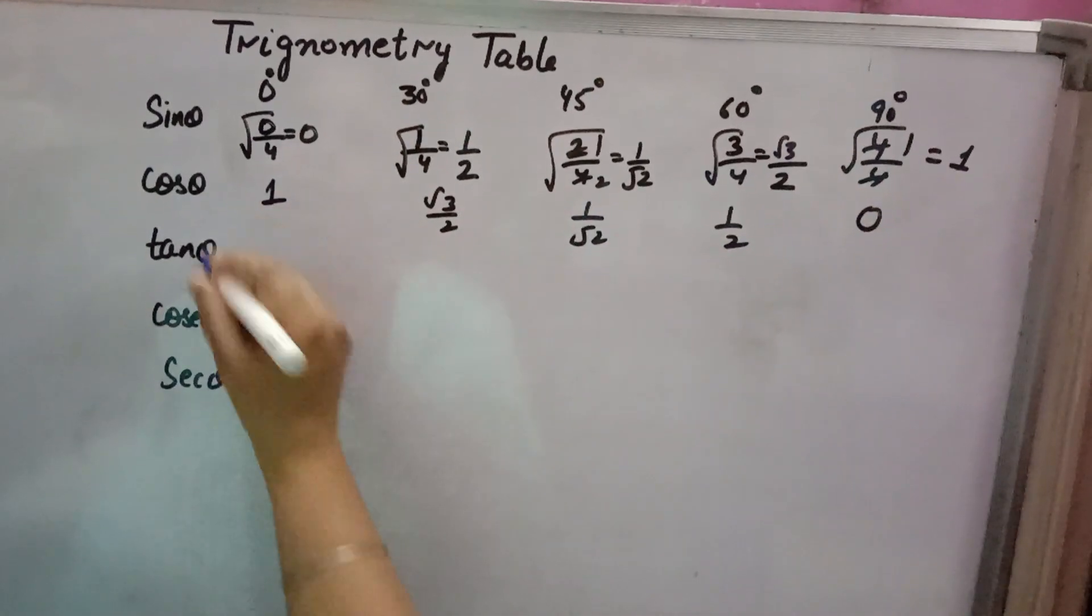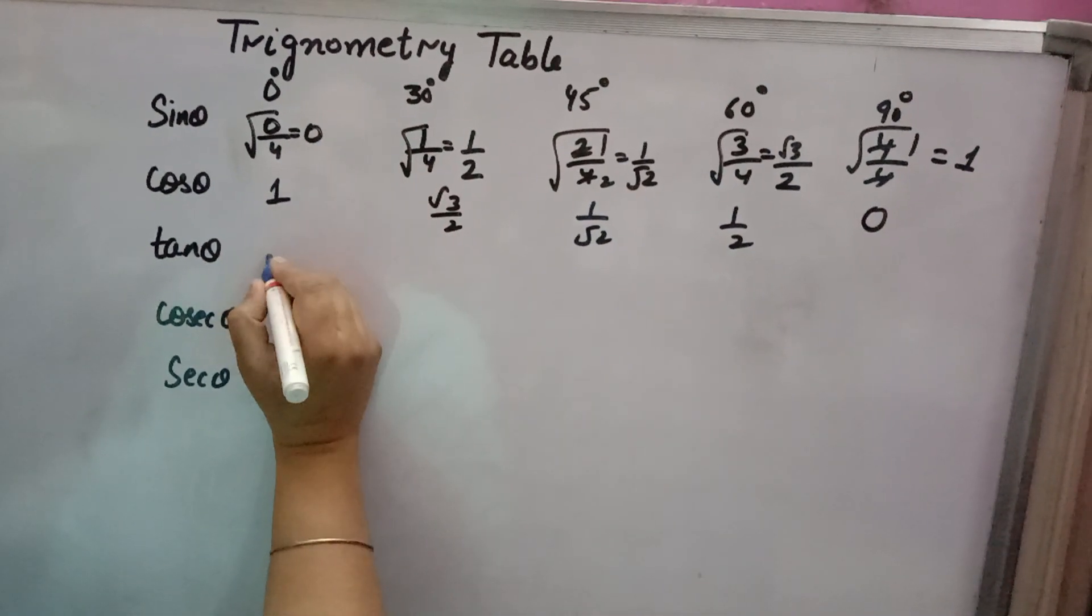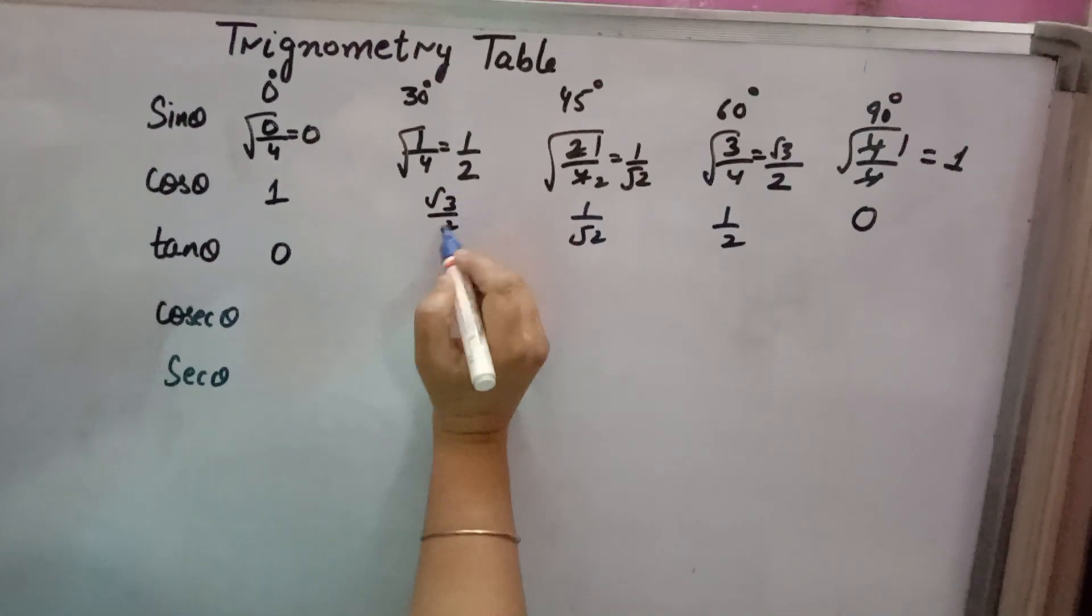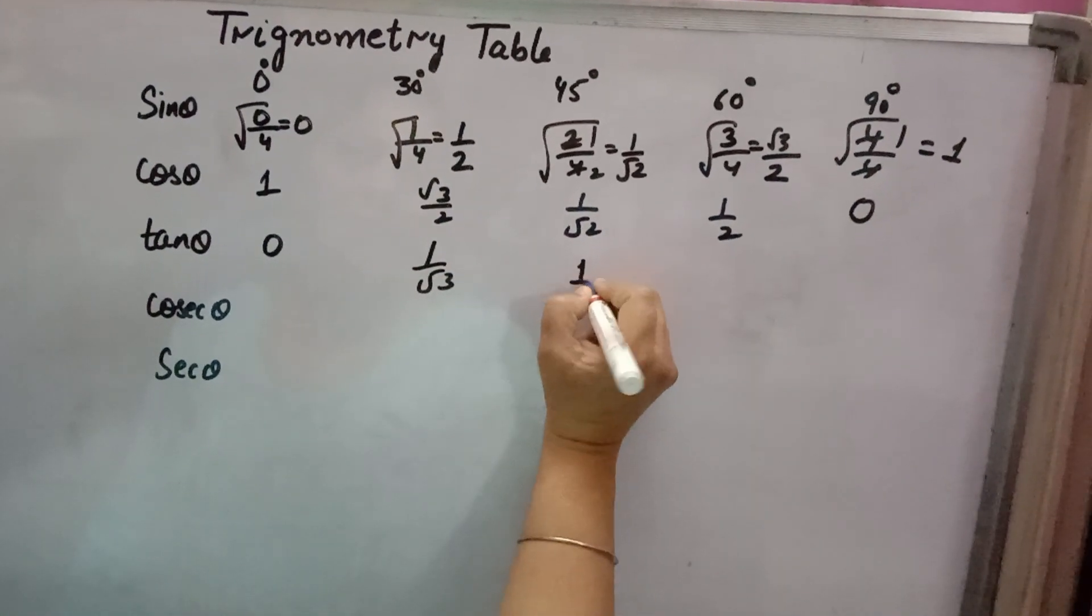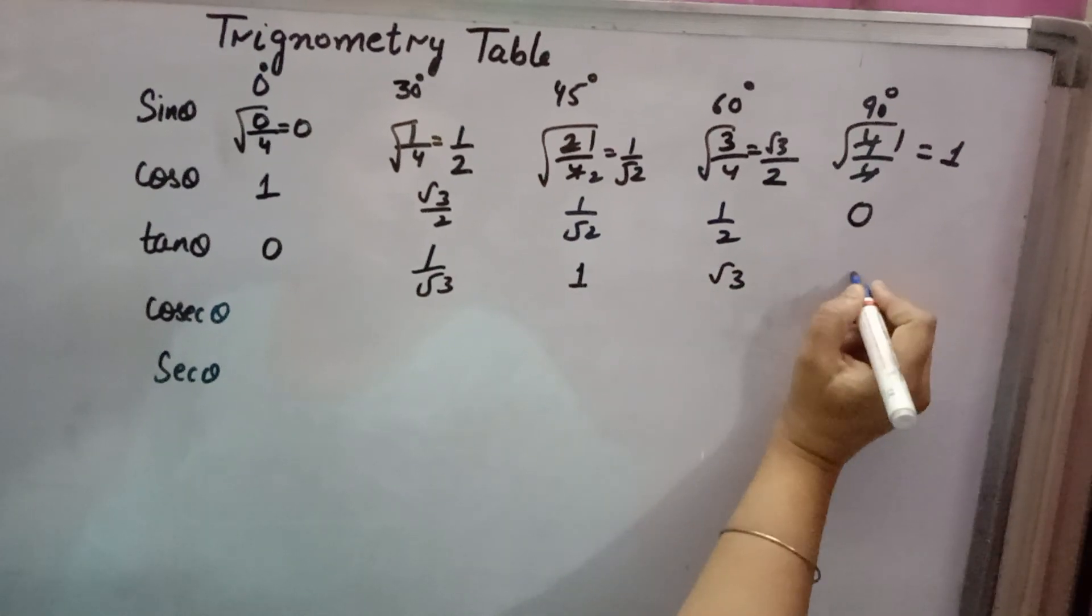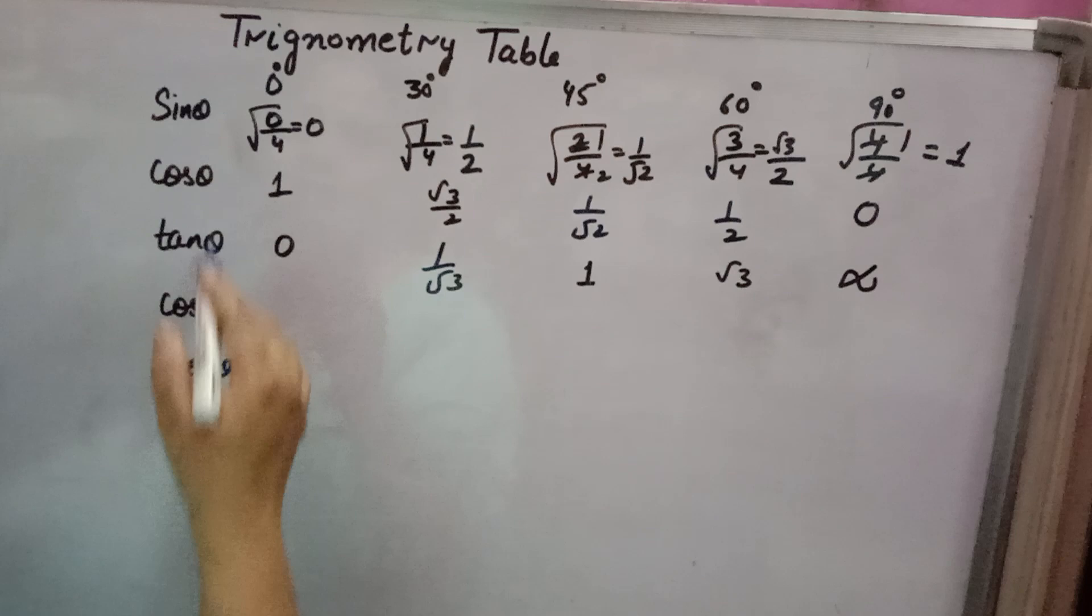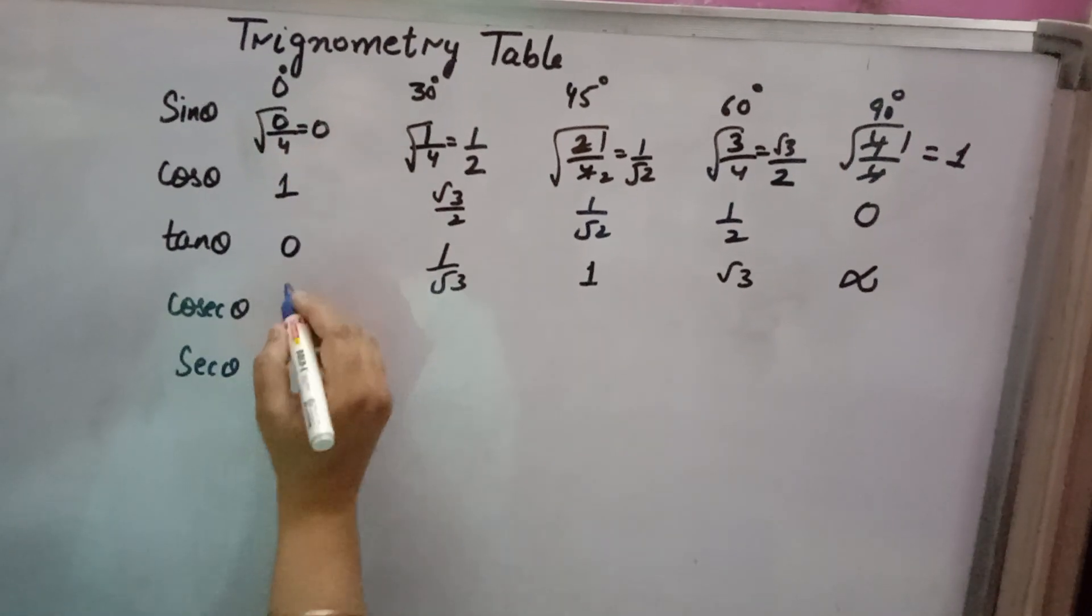For tan theta, divide sine by cosine: 0 over 1 is 0. Tan theta equals sine over cosine, the 2s cancel, giving 1 by root 3, then 1, root 3, and 1 over 0 is infinity and not defined.